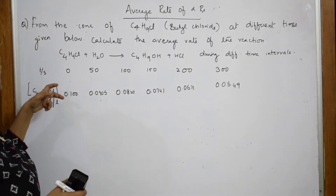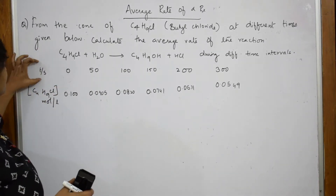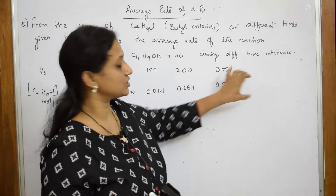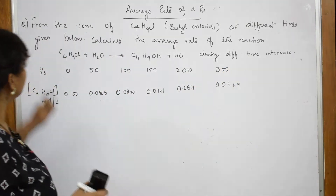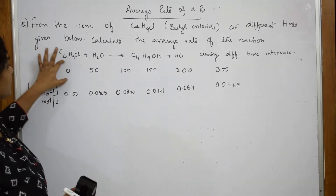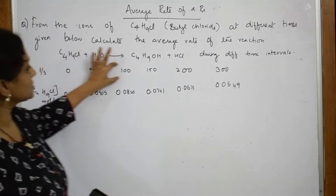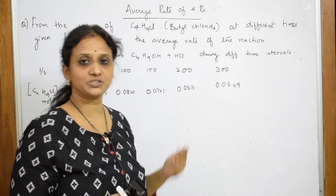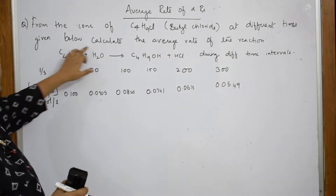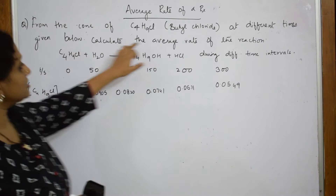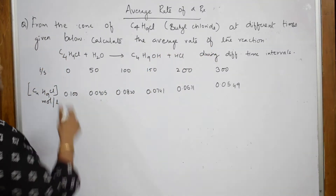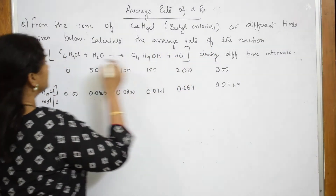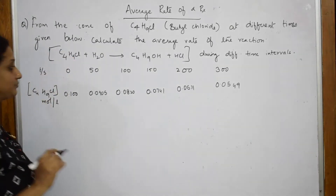They have given two things: one is the concentration term, which is your molar concentration, and they have given us time. This is the time interval at different time intervals along with the concentration. So, calculate the average rate of reaction for this particular data. We are supposed to calculate the average rate.